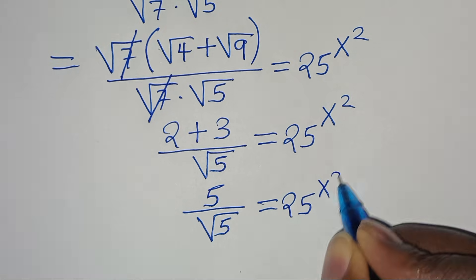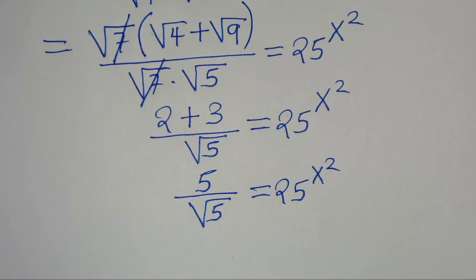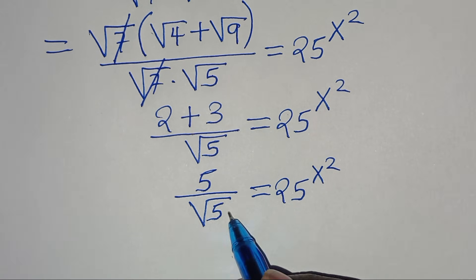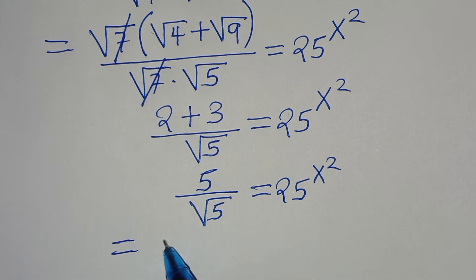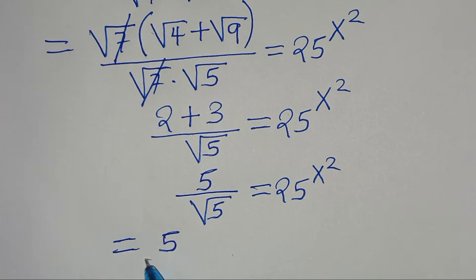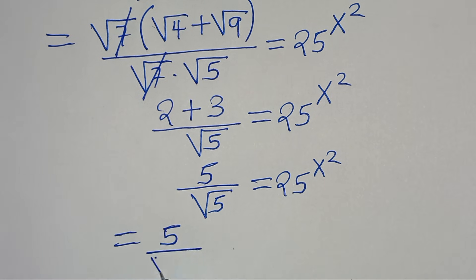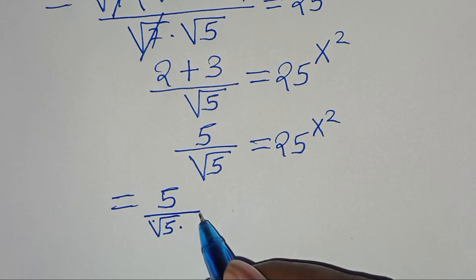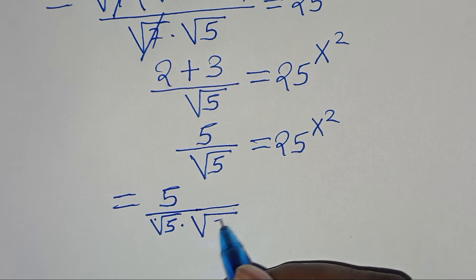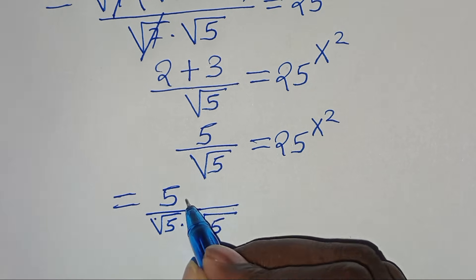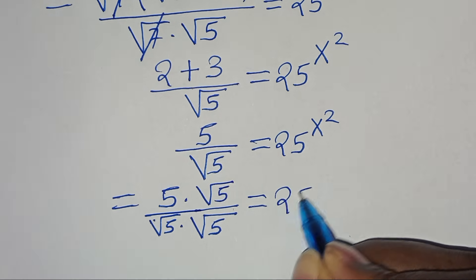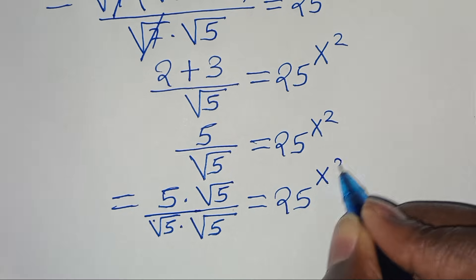We have the square root of 5 in the denominator, so we need to rationalize the denominator. This implies we have 5 divided by the square root of 5. Rationalizing the denominator means we multiply both the numerator and the denominator by the square root of 5. This is equal to 25 raised to the power of x squared.